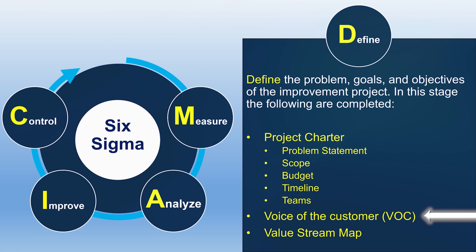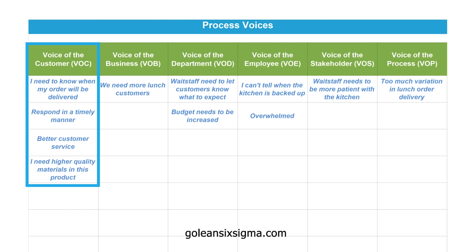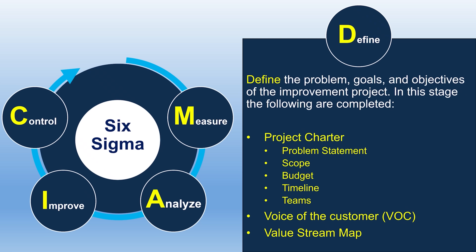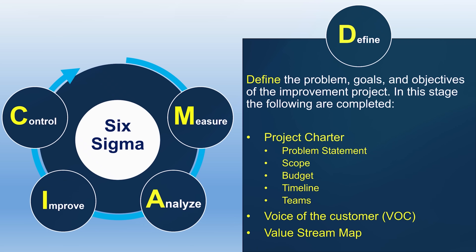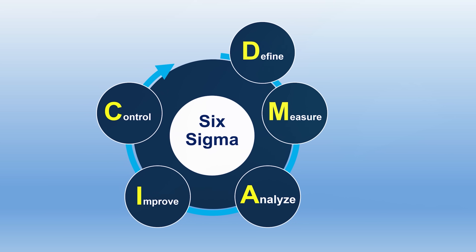Then we have what we call the Voice of the Customer. We always keep the customer front and center when it comes to quality and continuous improvement. The Voice of the Customer is feedback from the customer that we're considering when trying to solve this quality problem. And then we have value stream mapping, where we map out a process to determine where our value-added activities and non-value-added activities are, with the hopes of eliminating most of those non-value-added activities.